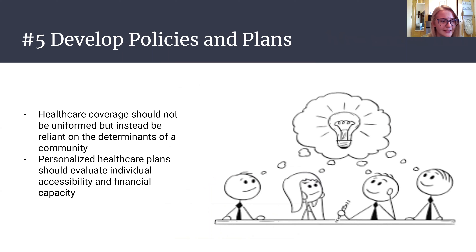For developing a policy around access to health services, one plan that stands apart is regulating the price of health care in a way that is affordable for all members of a community. No one chooses to fall ill. In order to implement a reasonable policy, the coverage of health care should be determined by an area's economic status as well as an individual's need. By making each health care plan personalized and evaluating individual accessibility, there can be a larger community impact.